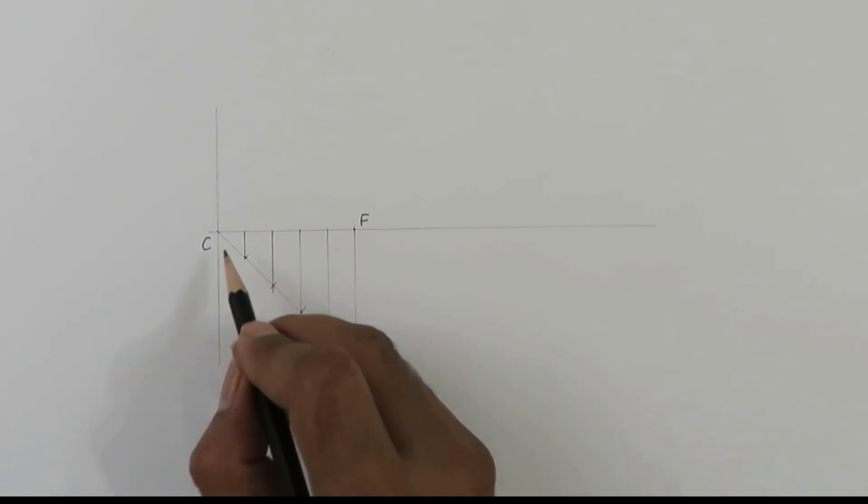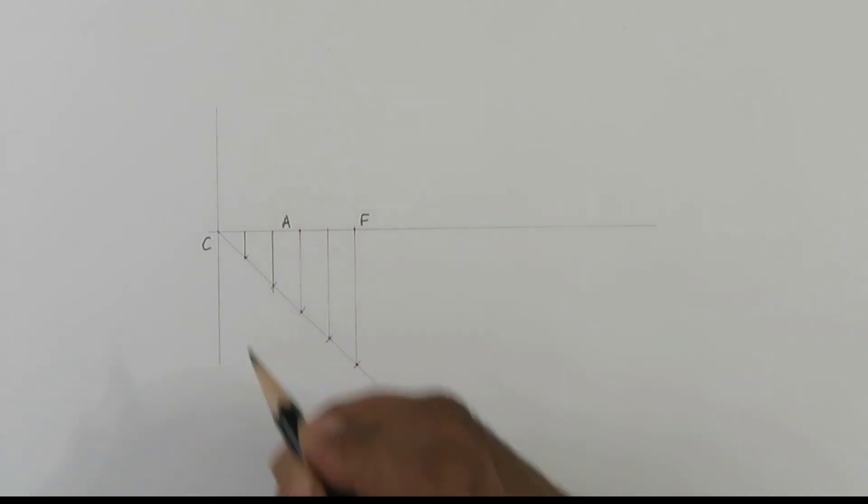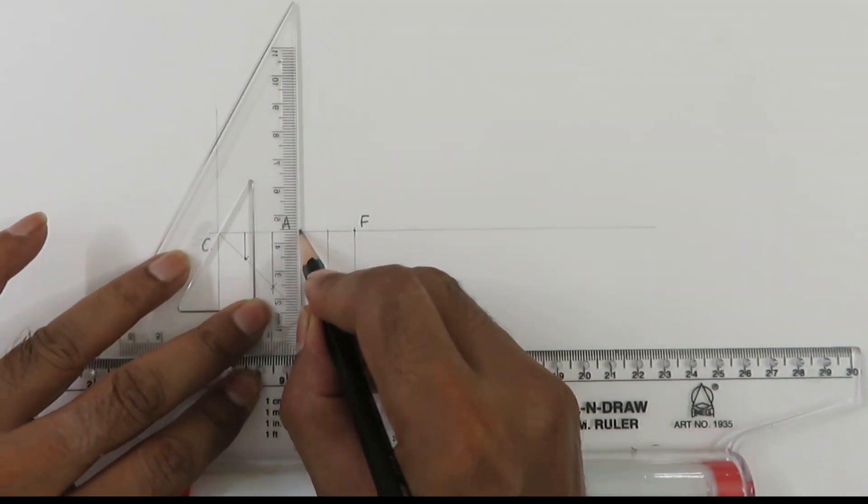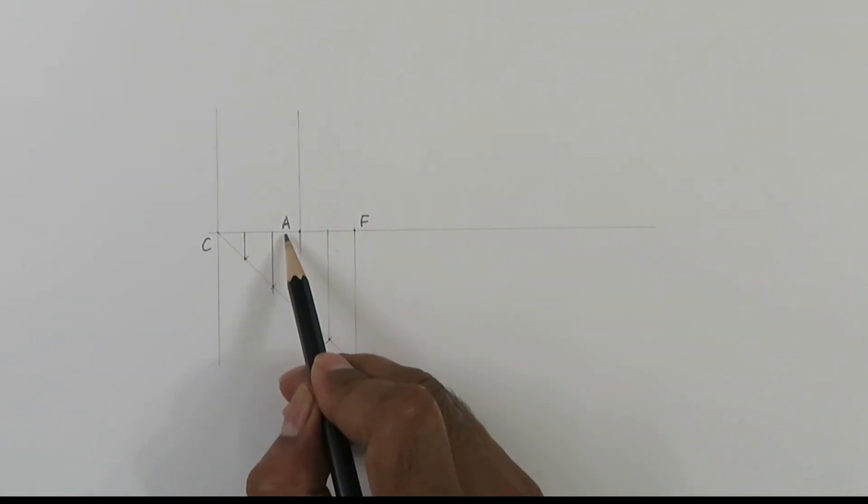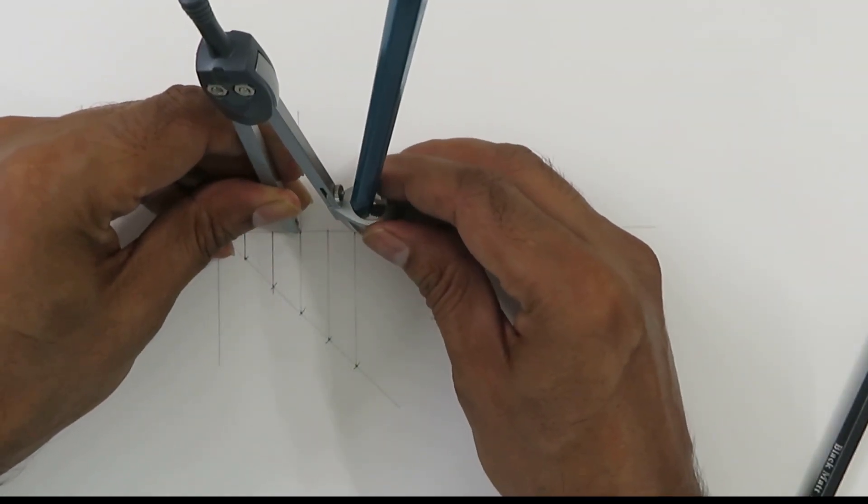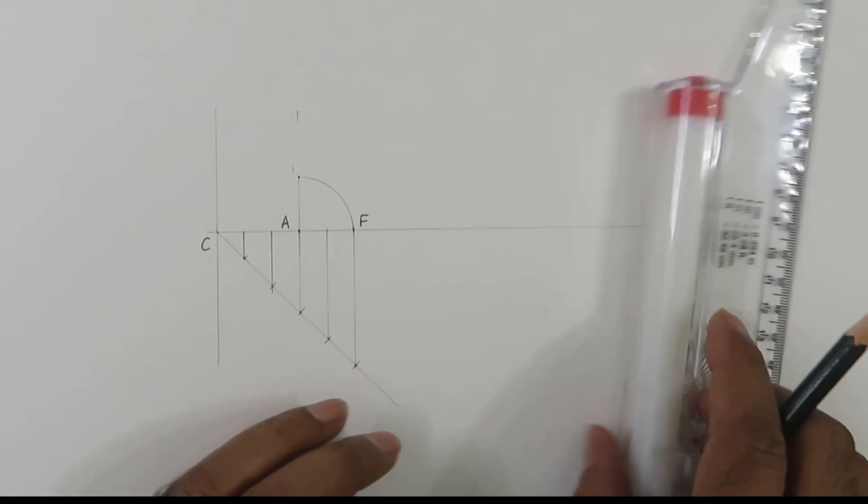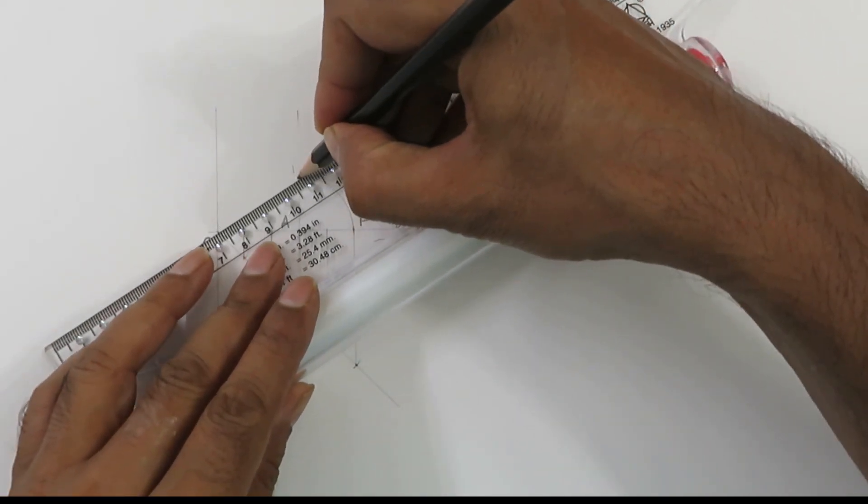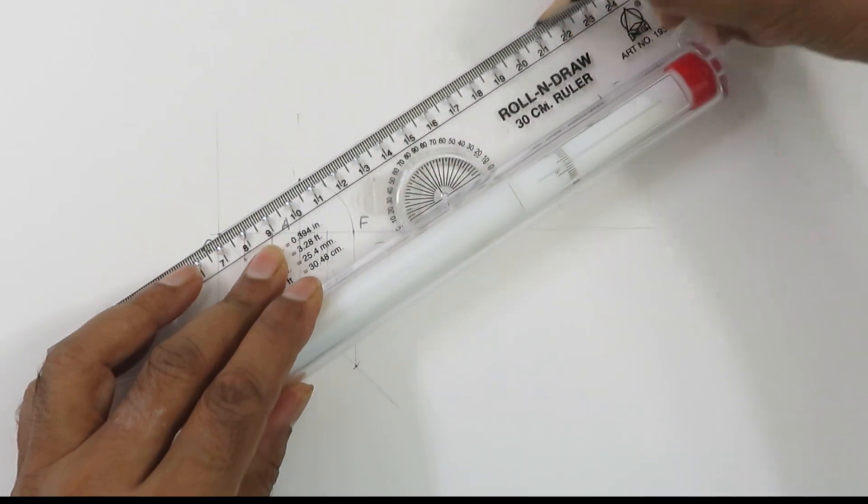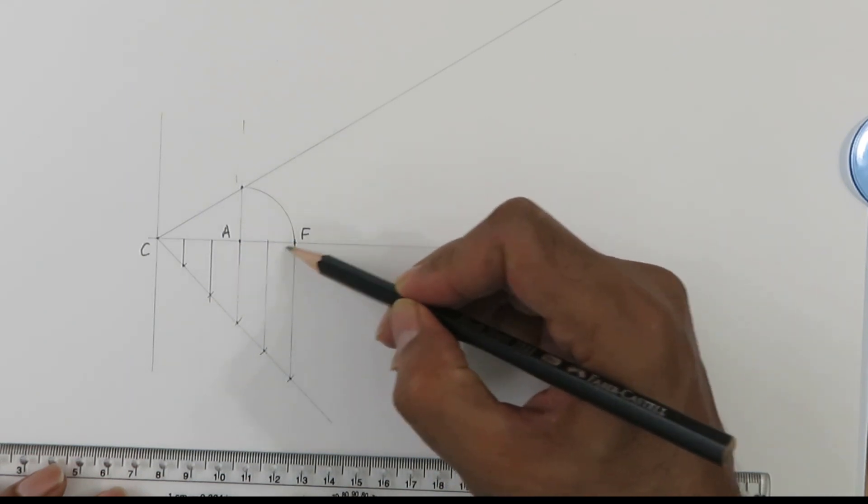We have divided CF into 5 equal parts 1, 2, 3, 4, 5. Out of this 5 we take the 3 parts from this side and we call it point A. Now we have got 3 parts here, 2 parts here. We take this on our compass and draw an arc.